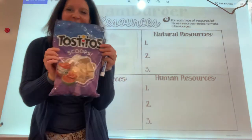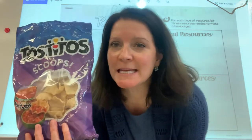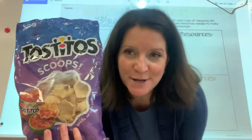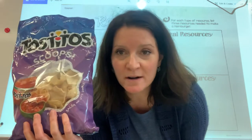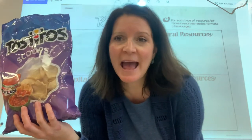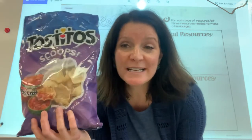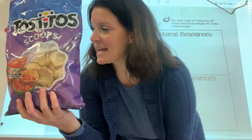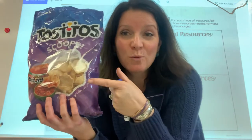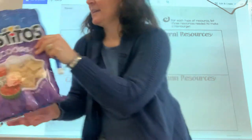Ladies and gentlemen, today we are going to talk about Tostitos scoops. I'm going to eat them when I'm done with this video. Tostitos are corn chips. They are made out of corn, but it's not just a chip in a bag — a lot of resources go into this bag of chips. You just read about resources and the regions all have different resources in the United States. We're going to talk about corn chips. Where do they come from? Let's take a look.